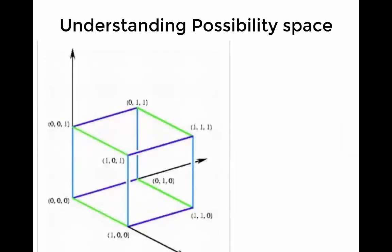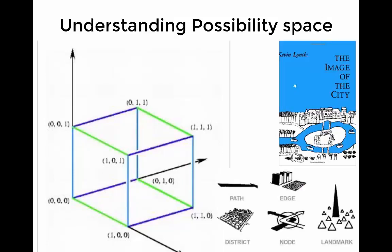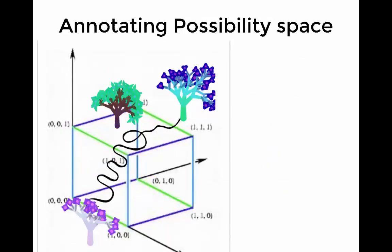It may be that the way we understand possibility space is similar to the way that we understand physical space. There's a book called Image of the City, which describes how people understand their way around cities using paths, edges, districts, nodes, and landmarks. If you don't have these ideas, you can't understand how to navigate a city. We just saw these same features pop up in understanding possibility space as well. I wonder how far you could push this metaphor.